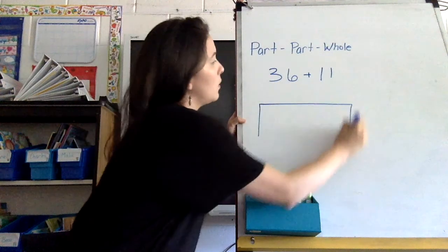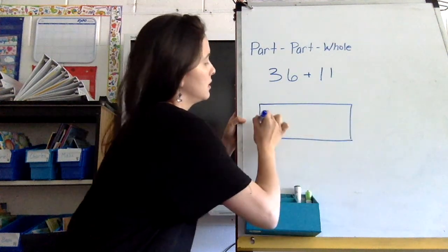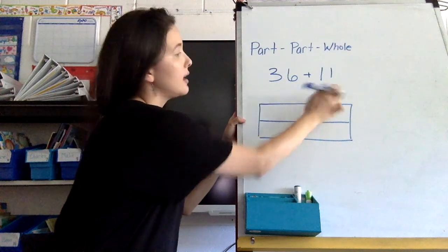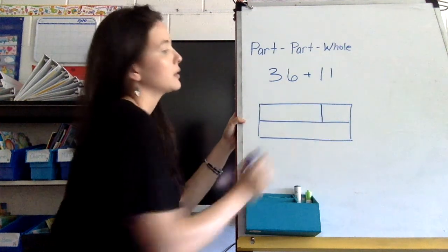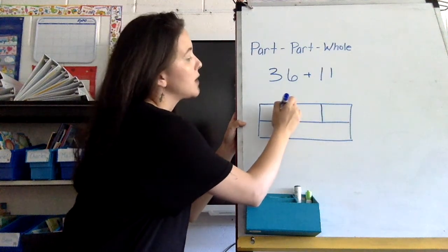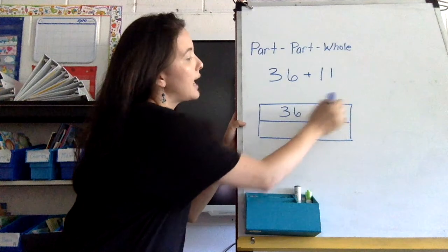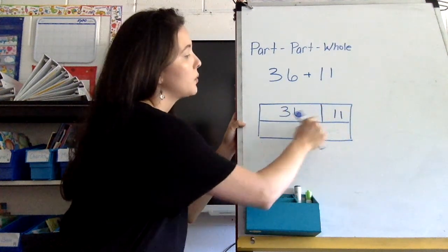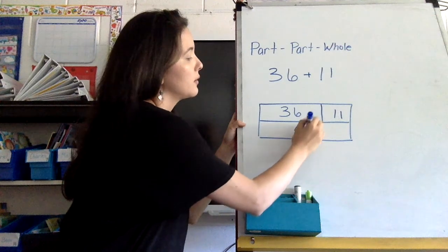If I draw my part-part-whole, I know 36 is larger than 11, so it would look like this. 36 is much larger than 11, so I'm writing 36 here and 11. So I have 47 right here.